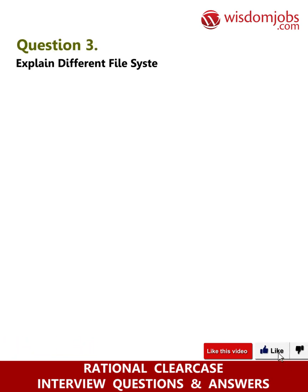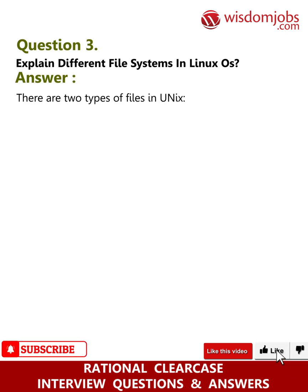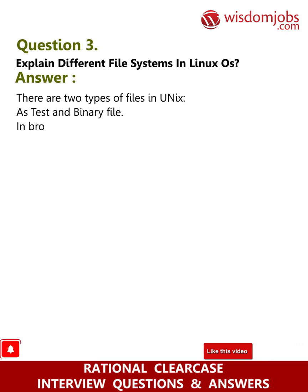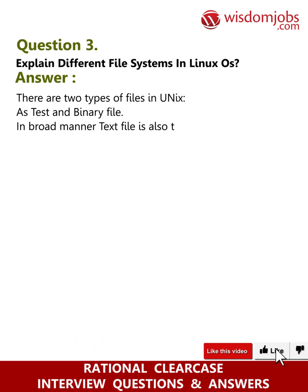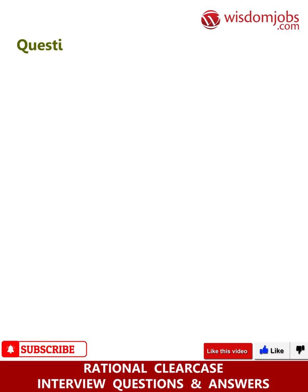In some instances, users may not see change set information in ClearQuest if no suitable ClearCase view can be located. Question 3: Explain different file systems in Linux. Answer: There are two types of files in Unix in a broad manner — text files and binary files. Text files are also of three types: normal text file, system text file, and device text file.